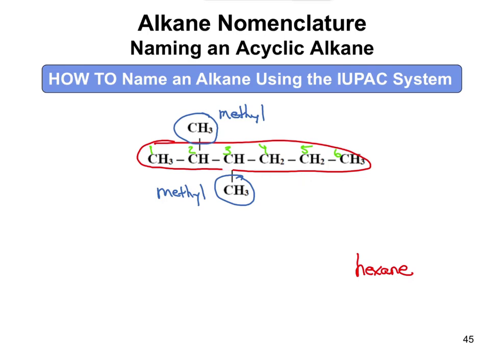That brings us to writing the final name. We have two methyls, so it's going to be dimethyl. Because there are two methyls, we need two numbers — two comma three with a dash. That means one methyl is on carbon two and another methyl is on carbon three. The final answer is 2,3-dimethylhexane.